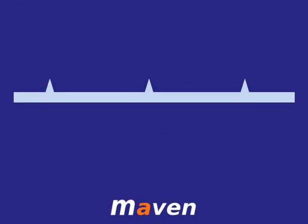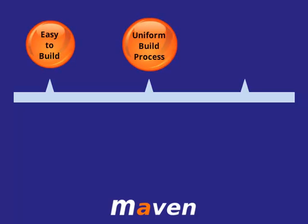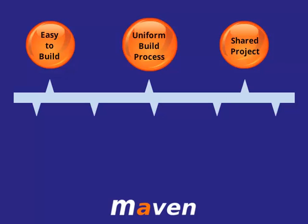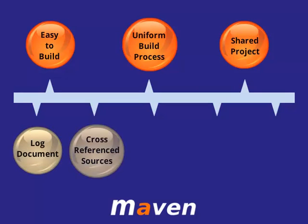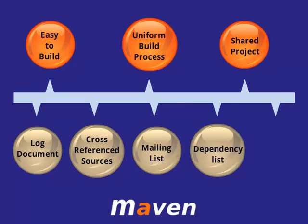Apart from simplifying the problems, Maven also makes a project easy to build. It provides a uniform build process and Maven projects can be shared by all other projects. It provides project information such as log documents, cross-referenced sources, mailing list, dependency list, unit test reports, etc.